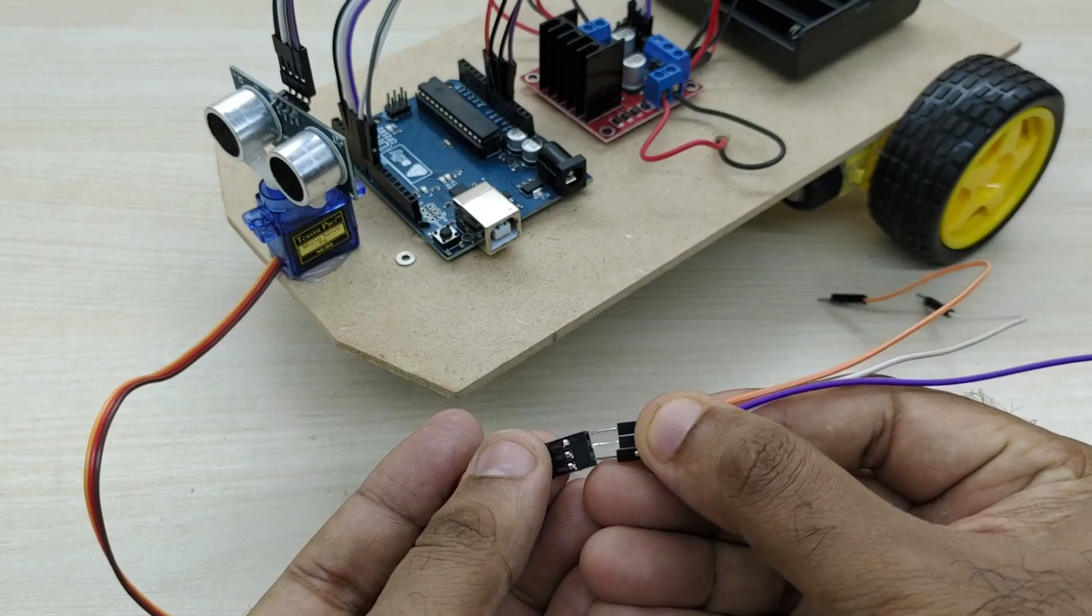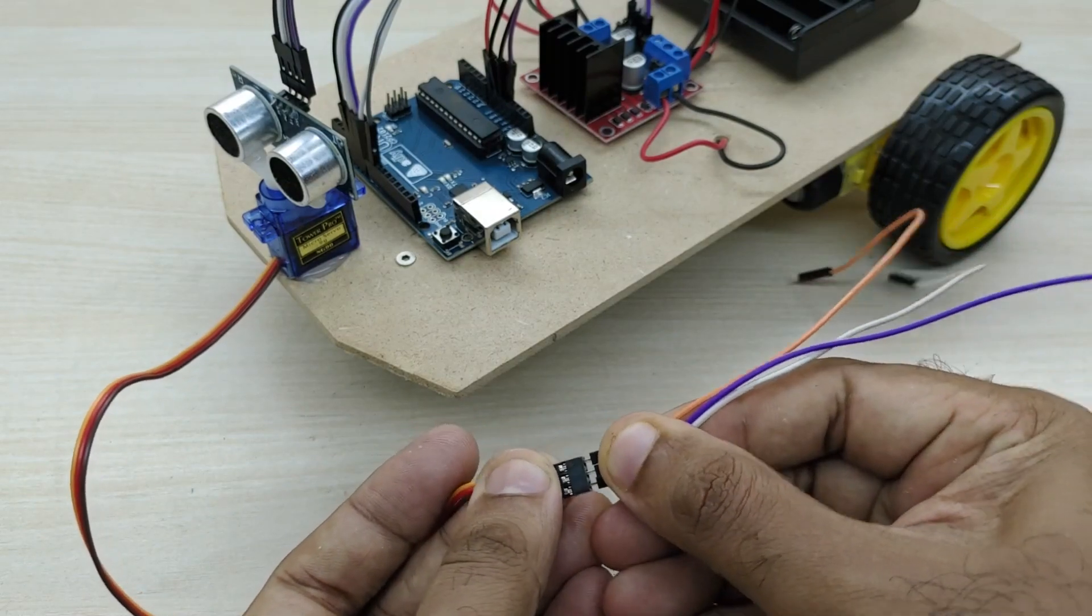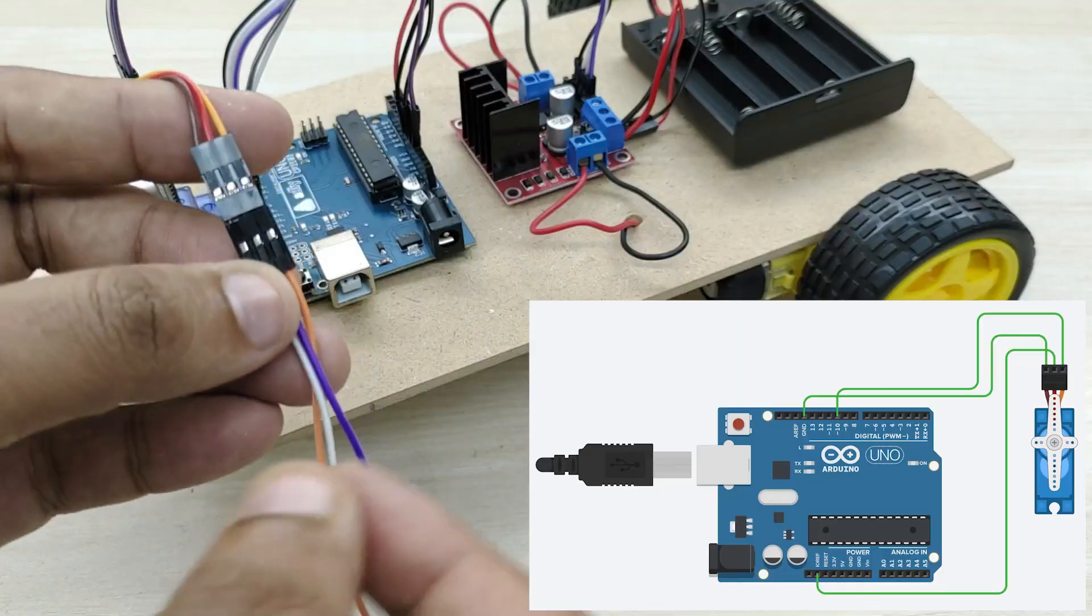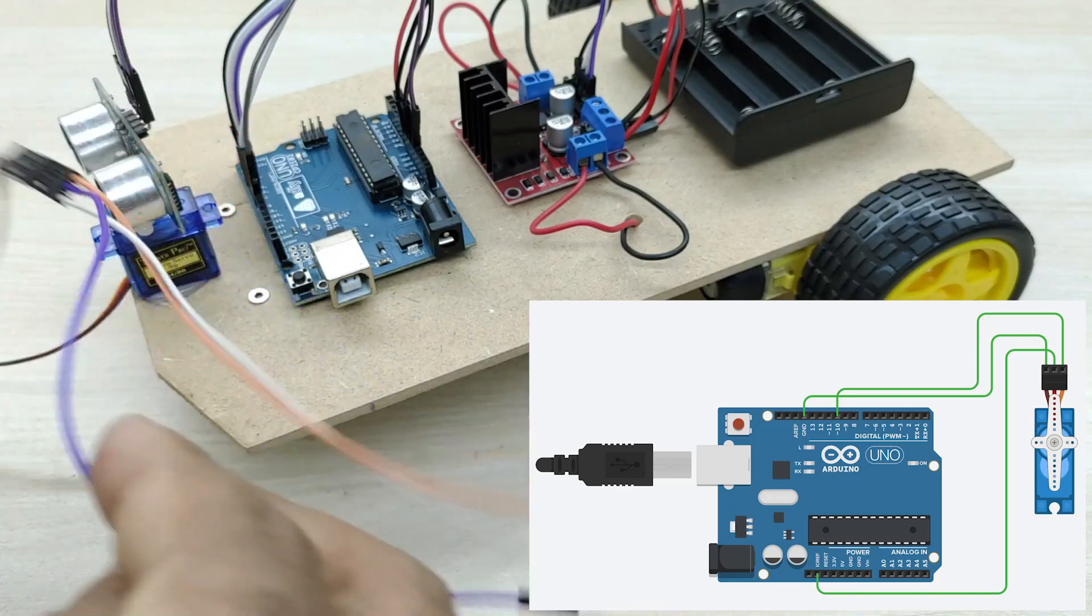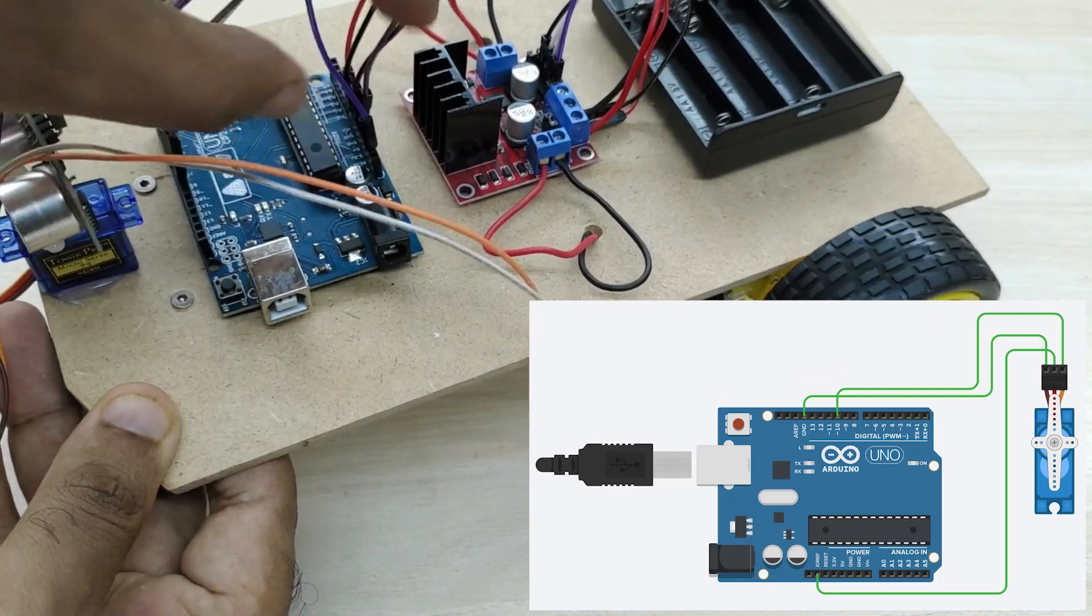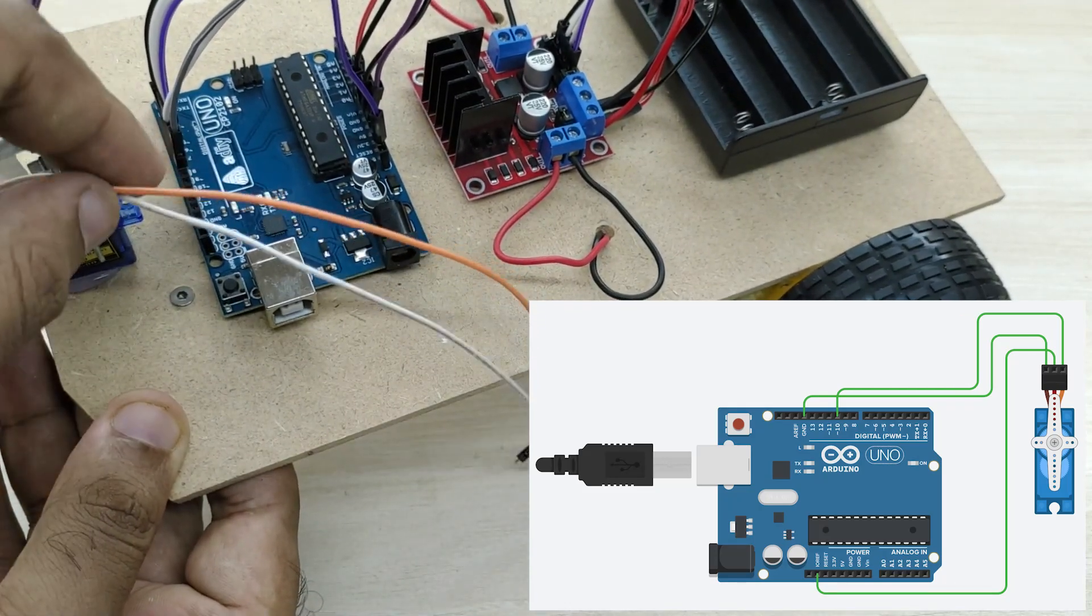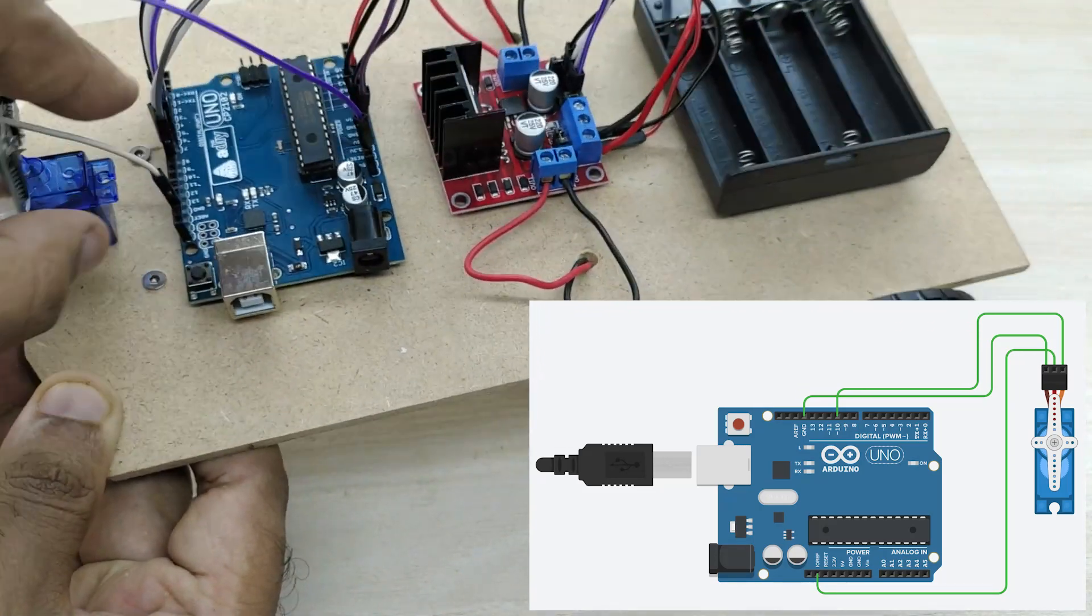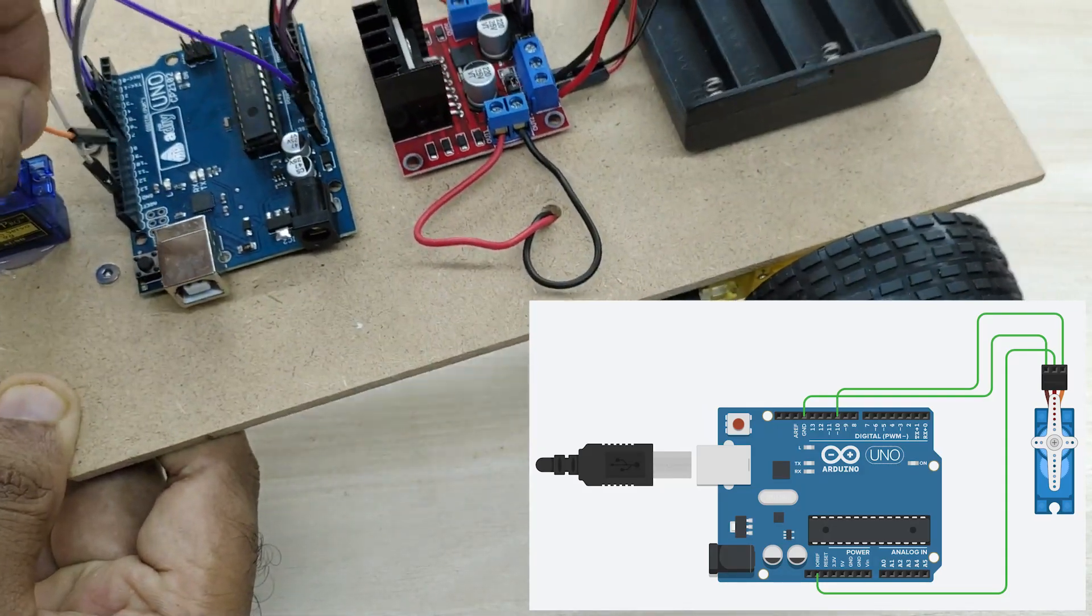Now, connect the other end to the motor driver board. Now connect jumper cable to the servo motor. Connect the signal cable, orange wire, from the servo motor to pin number 10 of the Arduino board, power cable, red wire, to plus 5 volt pin of the Arduino board and ground cable, black wire, to ground pin of the Arduino board.